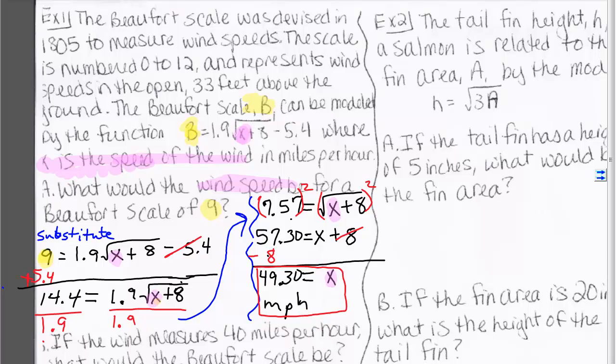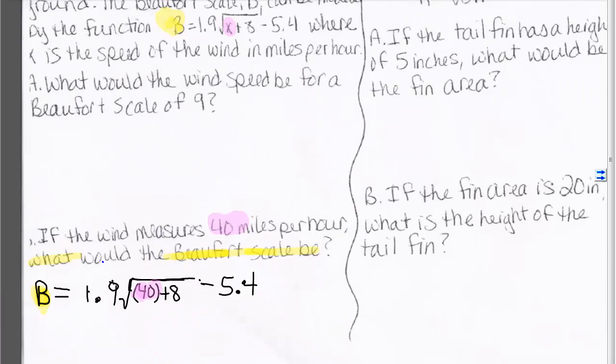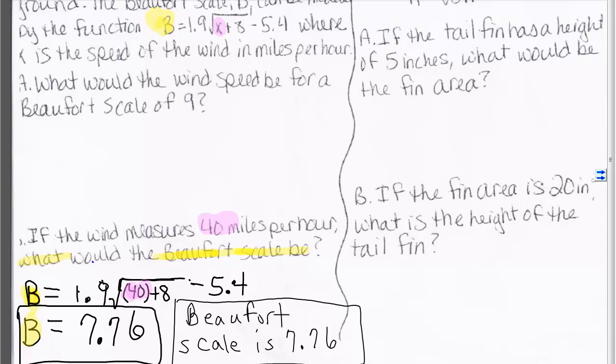Let's look at b. We are given x to be 40 miles per hour. Substitute 40 in for x. Now just plug this information into our calculator, and we get a Beaufort scale of 7.76.